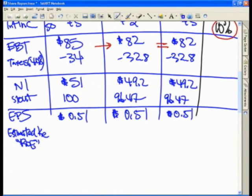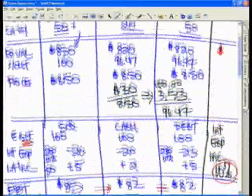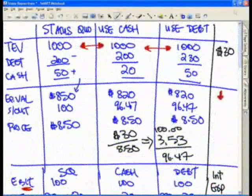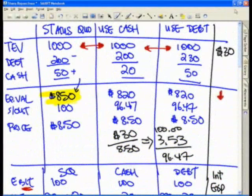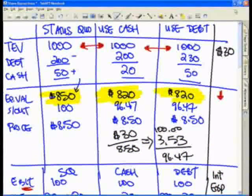How we get this is we'll take our net income of $51, $49.2, $49.2, and we will divide that by our equity value. Recall equity value is going to be $850, $820, and then $820.